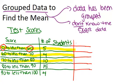So for the first group, between 0 and 60, the midpoint would be 30. For the next group, it would be 65, and then 75, 85, and 95.